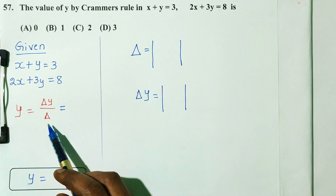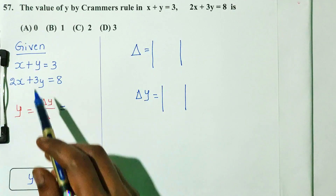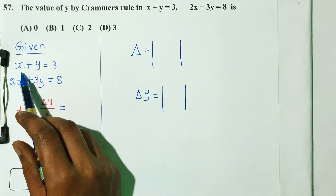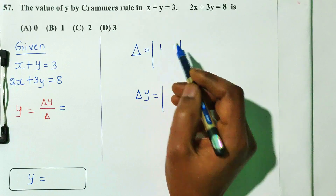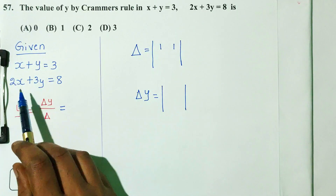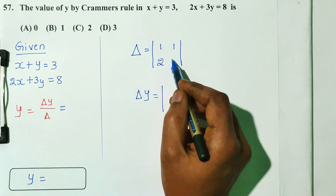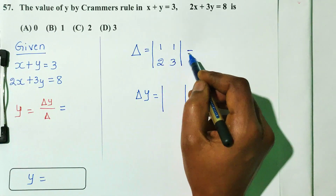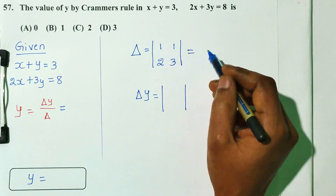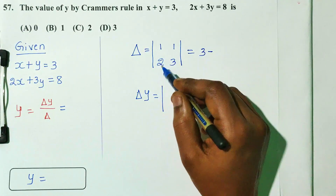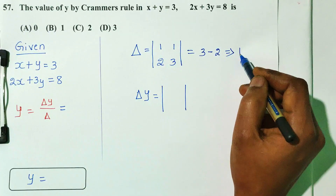First, we find delta. From the two equations, the coefficients are: first equation x-coefficient 1, y-coefficient 1; second equation x-coefficient 2, y-coefficient 3. So delta is the determinant of: 1, 1, 2, 3 — which gives 3 minus 2 equals 1.